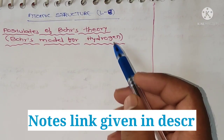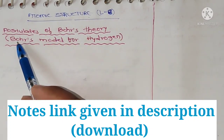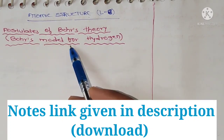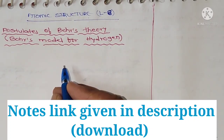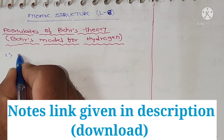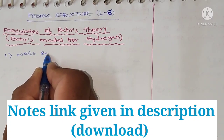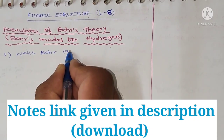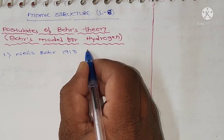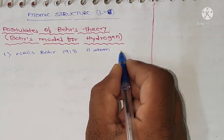Hello students, welcome to lecture 8 of Atomic Structure. Our topic is the postulates of Bohr's theory or Bohr's model for hydrogen. Niels Bohr in 1913 explained hydrogen atom structure and spectrum quantitatively.